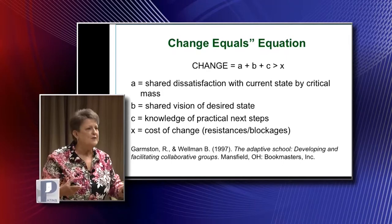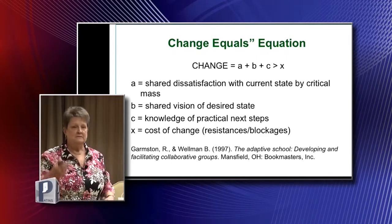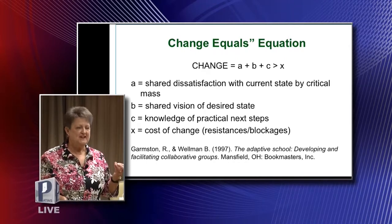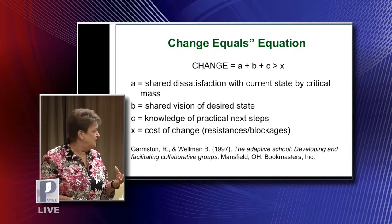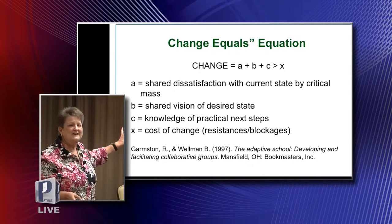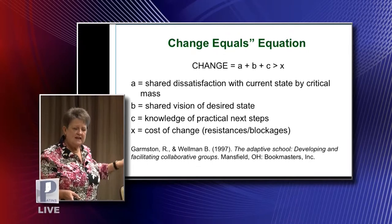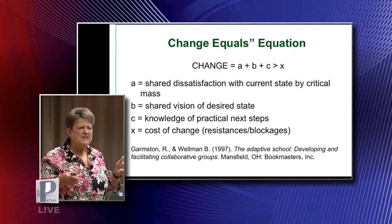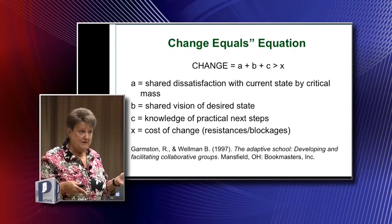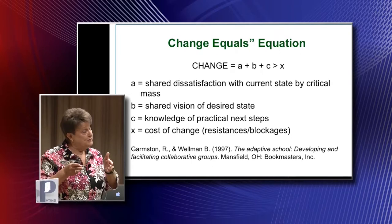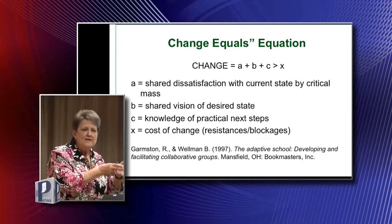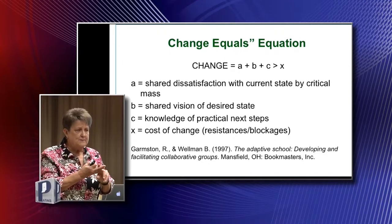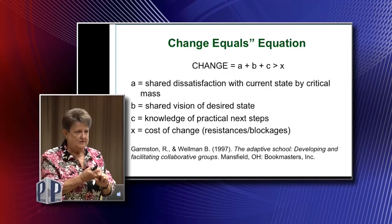We are not a critical mass in this room, but we are probably change agents in some way. A change agent looks at why change is not occurring and asks: Is it because not enough people care? Or is it because people don't have any idea where to go? We know the current state's not okay, but we don't know where we want to go. Or is it because we really don't know how to get there, even if we do know where to go?